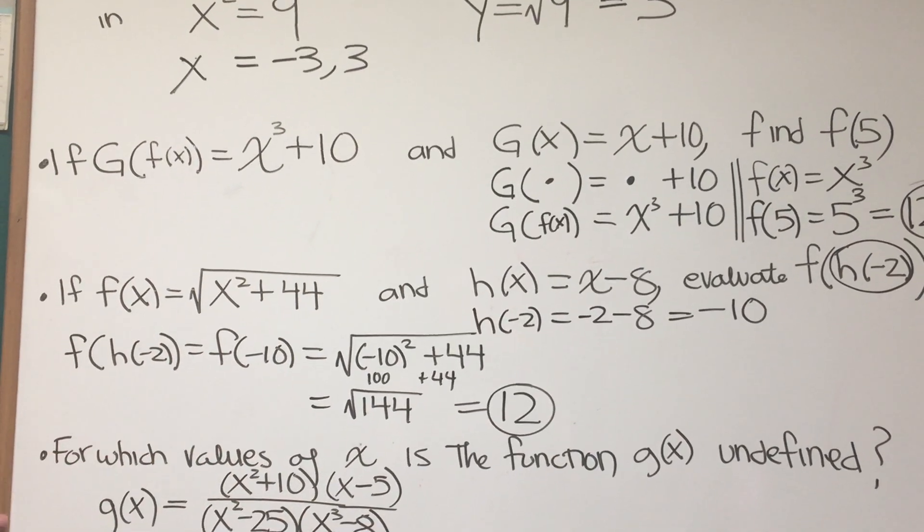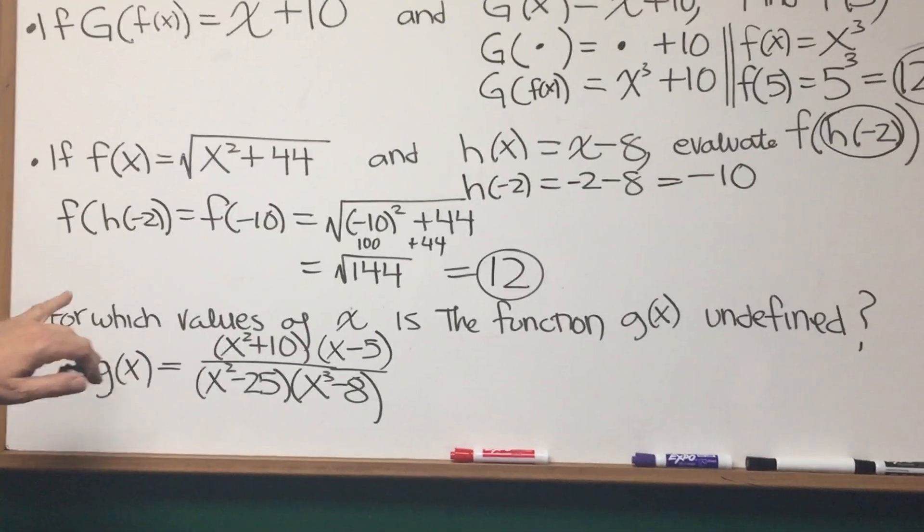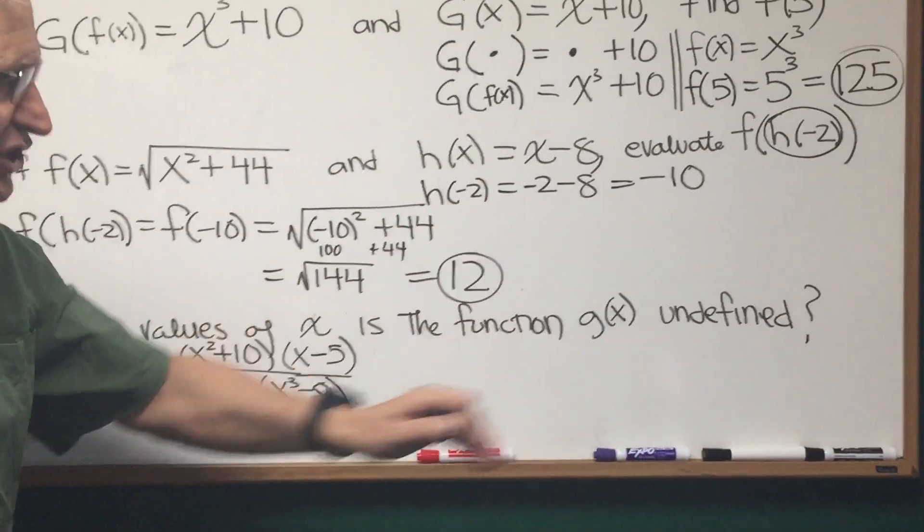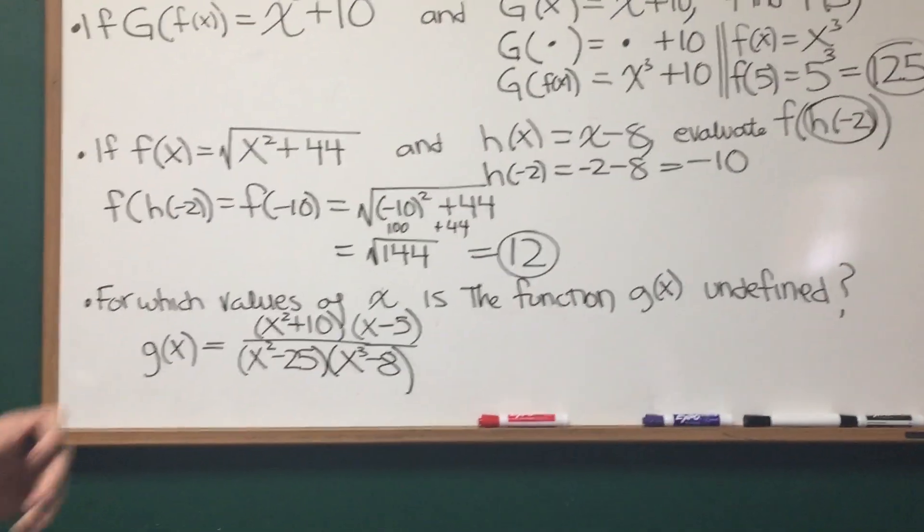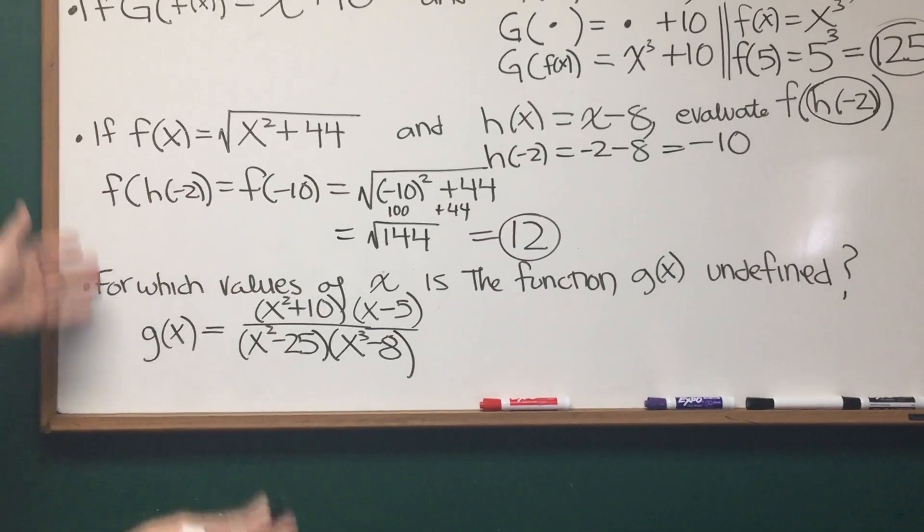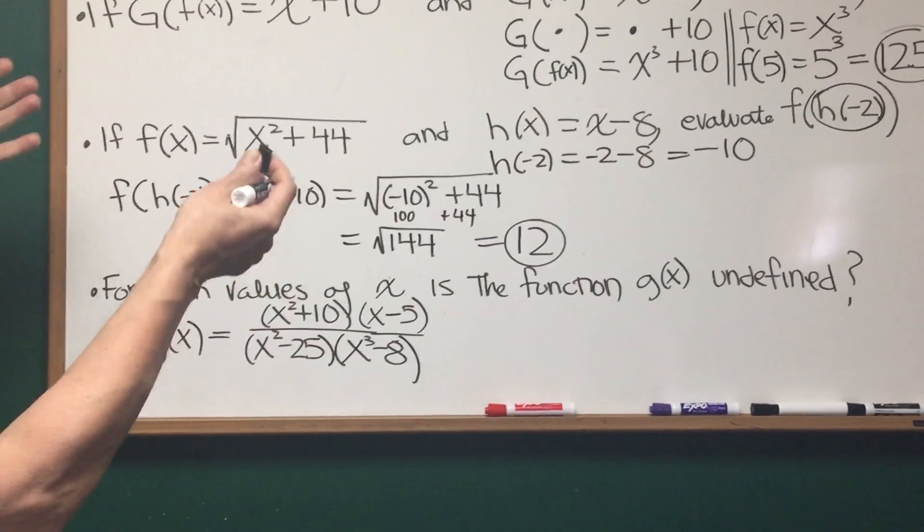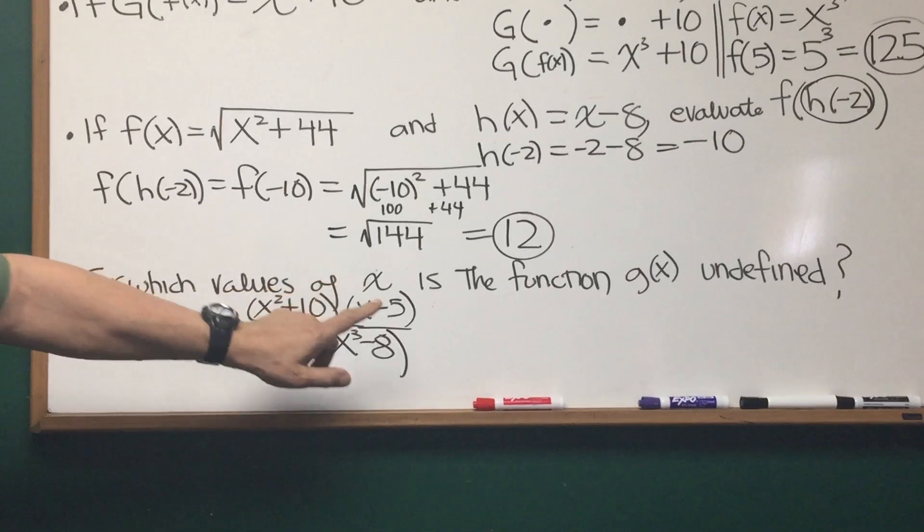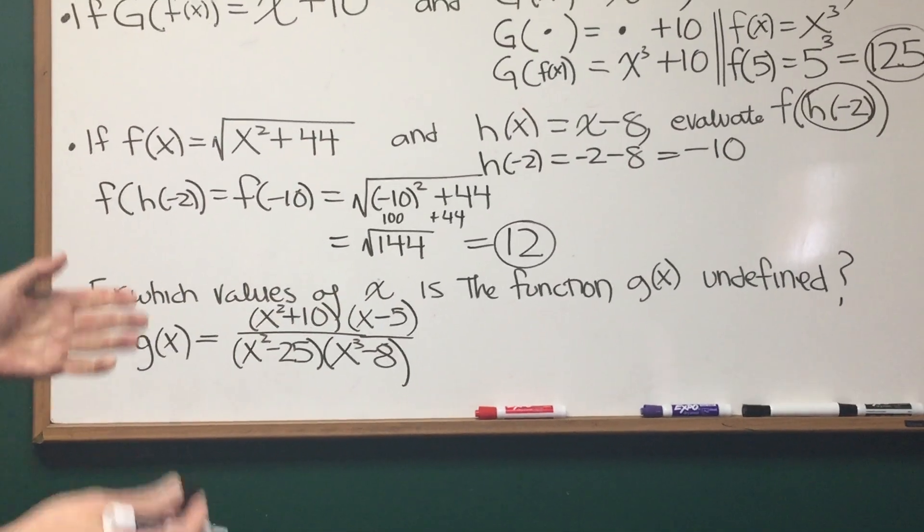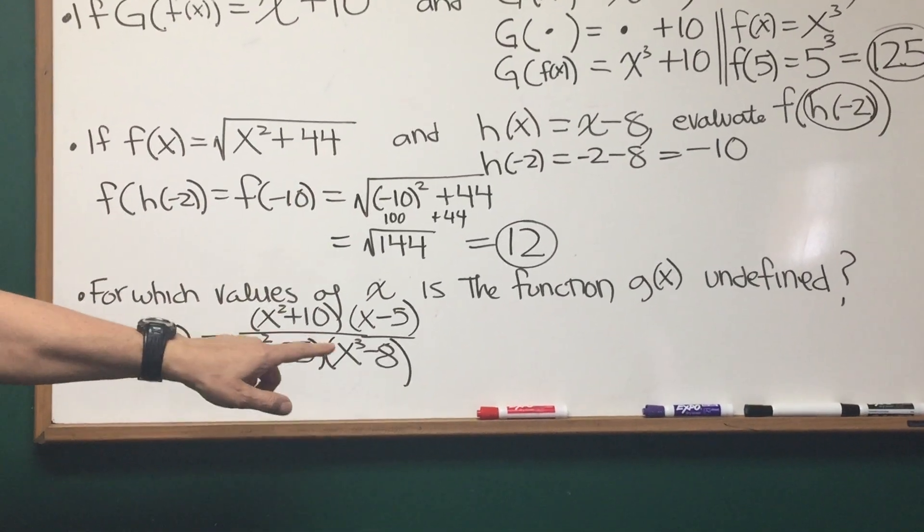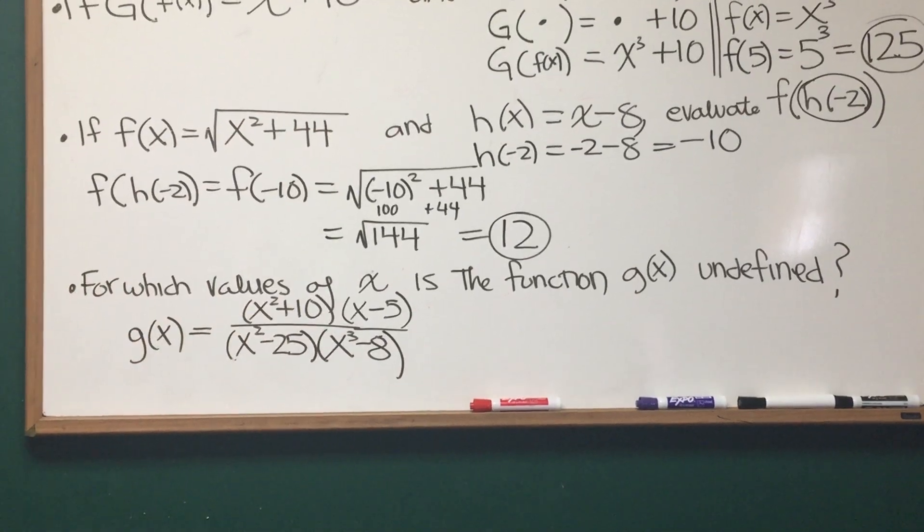Okay, final example in function notation. For which values of x is the function g of x undefined? Well, let's take a look at g of x. g of x is equal to quantity, it's a fraction. In the numerator, x squared plus 10 times x minus 5. In the denominator, x squared minus 25, x cubed minus 8.